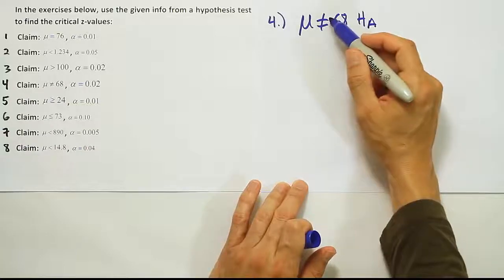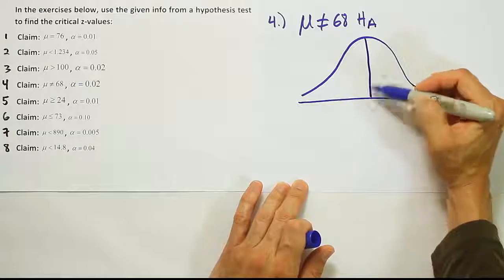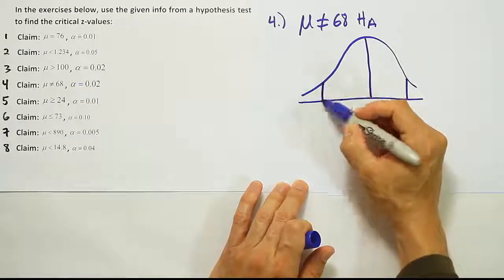And whenever it's not equal to, we know that it's a two-tailed test. So whenever HA is not equal to, we're dealing with a two-tailed hypothesis test.